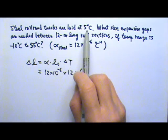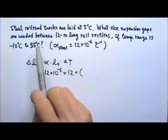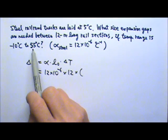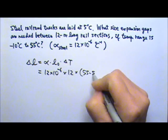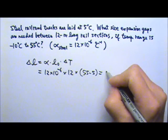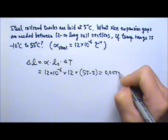So we only have to allow the temperatures to go from 5 to 55, not negative 10 to 55. So the delta T would be 55 minus 5, and this will give us 0.0072 meters, 7.2 millimeters.